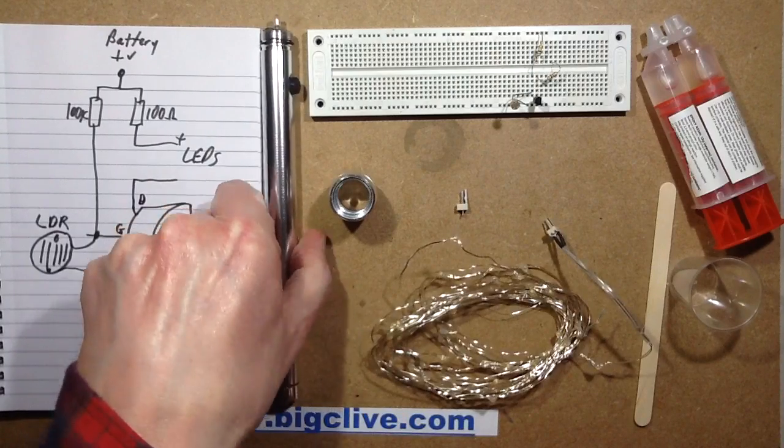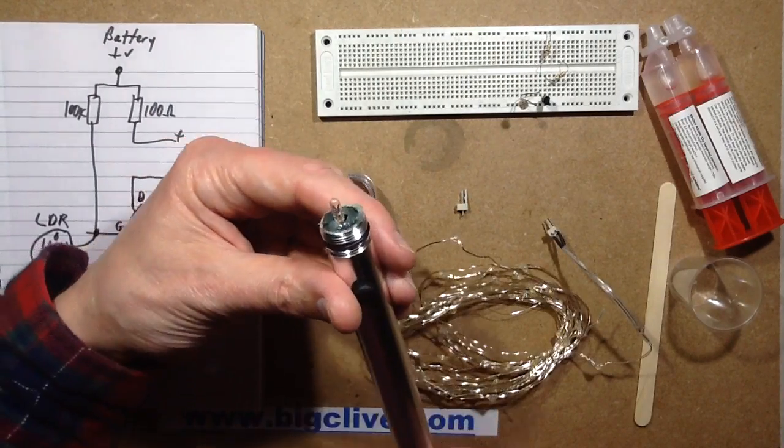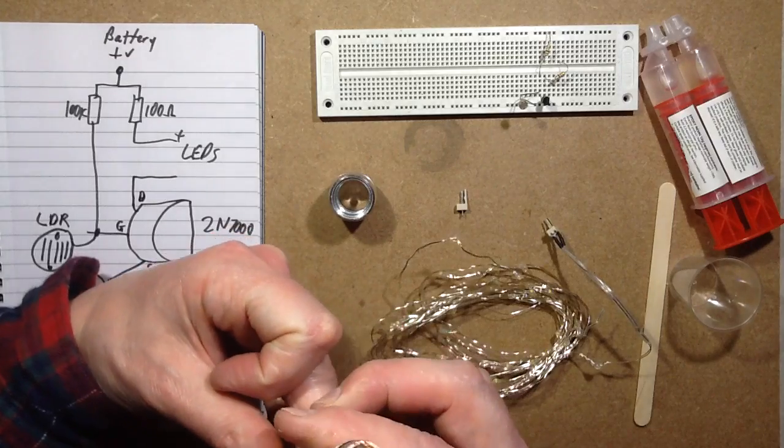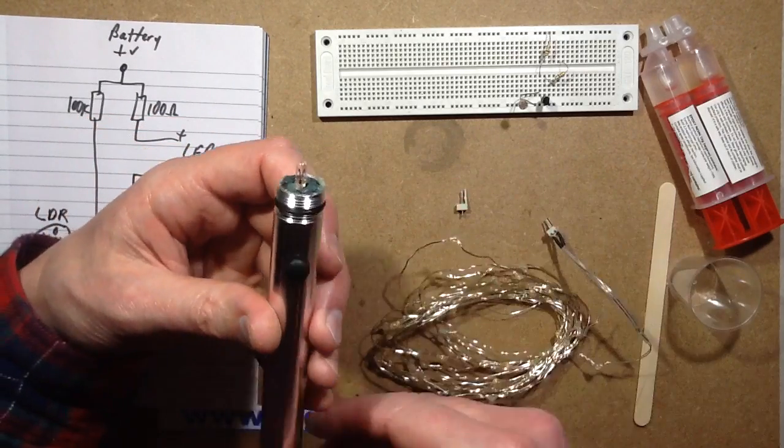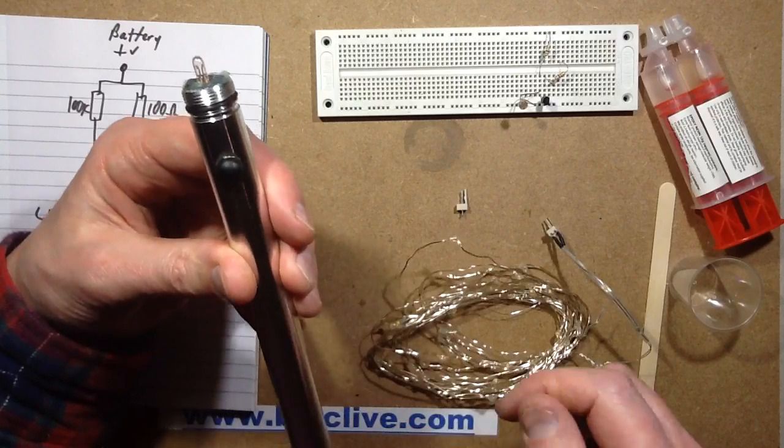Here's the torch, the Poundland torch, dollar store type torch, that's got the little lamp at the end. I showed how to take that to bits so you could actually use it as a power supply, a waterproof battery holder. I've knocked the lens off the end and taken the reflector out.